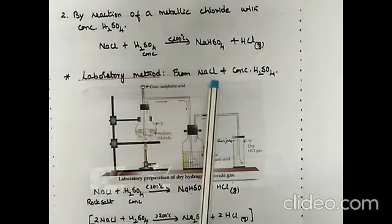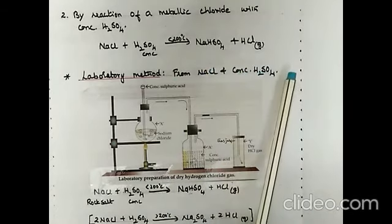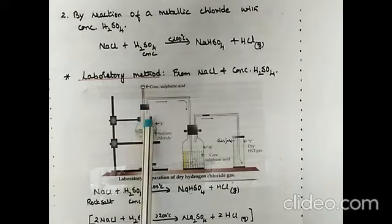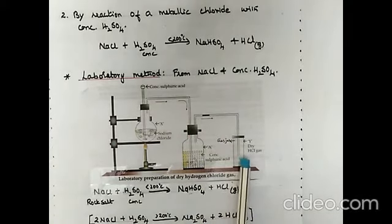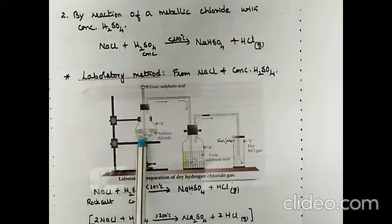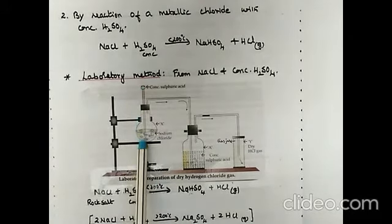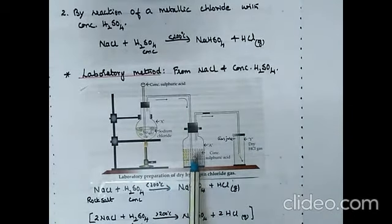The laboratory method uses only sodium chloride and concentrated sulfuric acid. A round-bottom flask is fitted with a two-hole rubber stopper — one hole has a thistle funnel, the other a delivery tube. The delivery tube is connected to washer bottle A containing concentrated sulfuric acid, and another delivery tube leads to a gas jar where the gas is collected. The stem of the thistle funnel must be dipped in the acid so gas cannot escape through it.